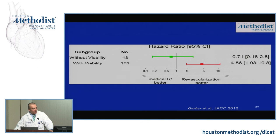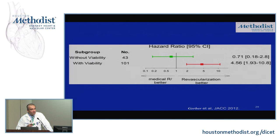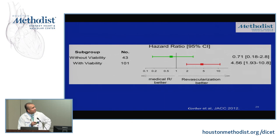Regarding the STICH trial, outcomes data with nuclear and echo-based techniques were nicely covered earlier. To add one outcomes study: a group of 150 patients from Europe looked at CMR and late gadolinium enhancement in relation to survival and likelihood of improvement. Patients with viability by CMR showed better outcomes with revascularization, while for those without viability, medical therapy and revascularization outcomes crossed near a hazard ratio of one — suggesting no clear benefit from revascularization in non-viable myocardium.